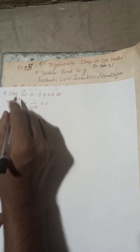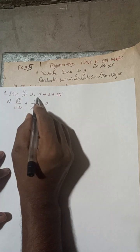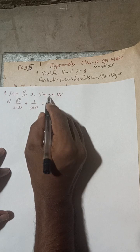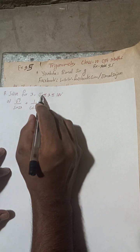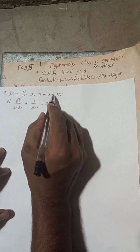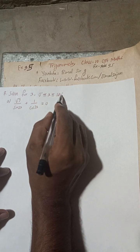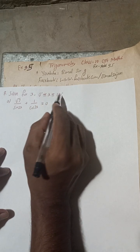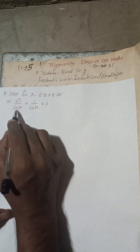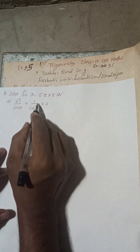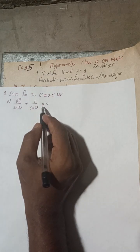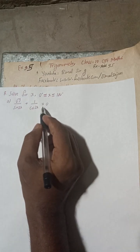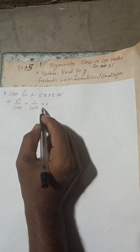Solve for x, where x is greater than or equal to 0 and less than or equal to 180 degrees. The equation is: root 3 divided by sin 2x plus 1 divided by cos 2x equals 0.